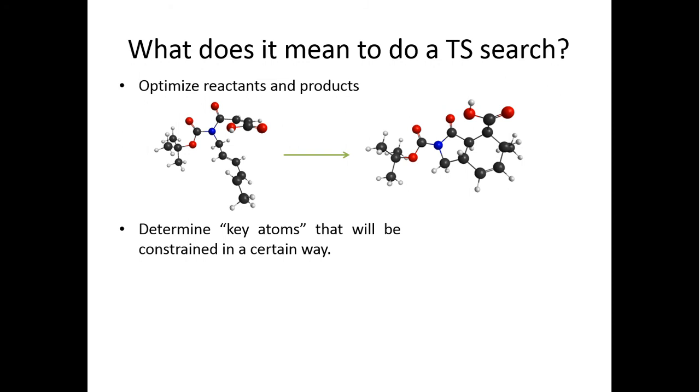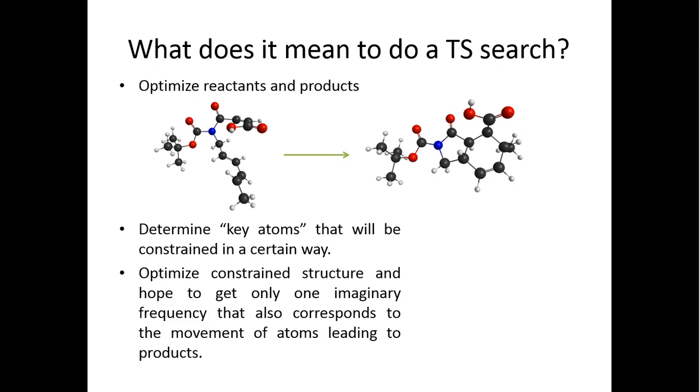You have to pick the atoms that will eventually form that bond that you're looking at and you have to figure out their position relative to each other. You have to find that distance that separates them far enough not to force them into the products yet, but then close enough not to push them back to the reactants. This is the really complicated step.